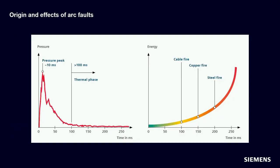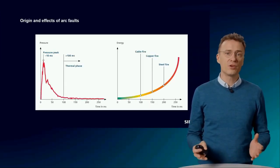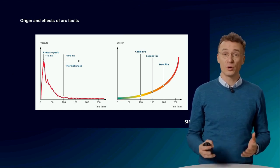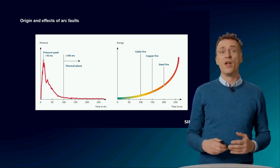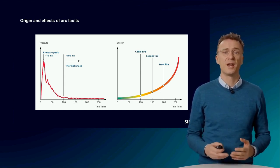The pressure rises rapidly, like an explosion — there's a bang. As a result, the temperature also rises sharply and can reach values of several thousand Kelvin. The high temperatures also burn or vaporize surrounding materials. The first thing that burns is the insulation materials of the cables, then the copper, and after some 200 milliseconds, the steel of the enclosure can also start to burn. The burning materials may also produce toxic fumes that should not be inhaled under any circumstances.